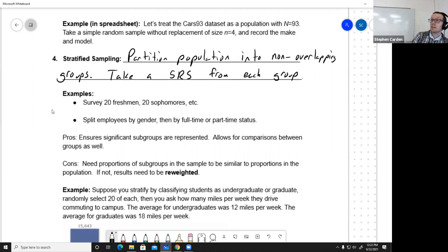If my population is students, then partitioning by class standing or ranking seems to make sense. I can split up into freshmen, sophomores, and juniors and seniors. I can take 20 random freshmen, 20 random sophomores, 20 juniors and so on. That would give me a stratified sample. If I've got a lot of employees, I could split them by gender and then into full-time or part-time status. Now I've got multiple groups. I can take a simple random sample out of each one of those.